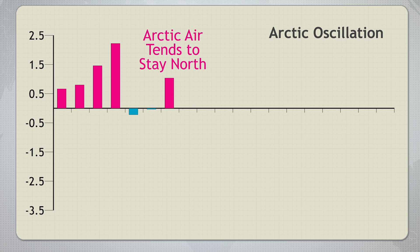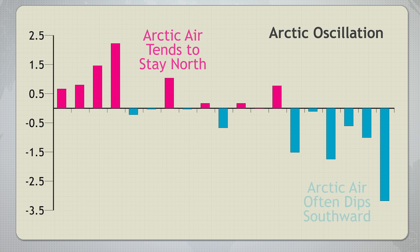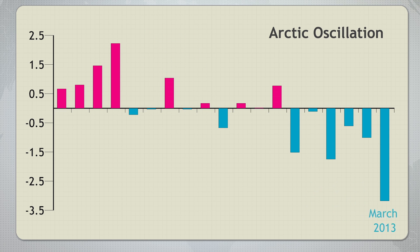But when the AO switches to its negative phase, frigid air can flow out of the Arctic and bring unusually cold weather farther south. In March 2013, the AO was at times about as negative as it's been for decades — especially for the month of March — and we saw some bone-chilling outcomes in the Midwest.